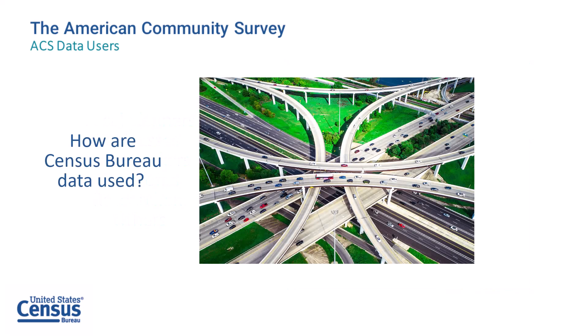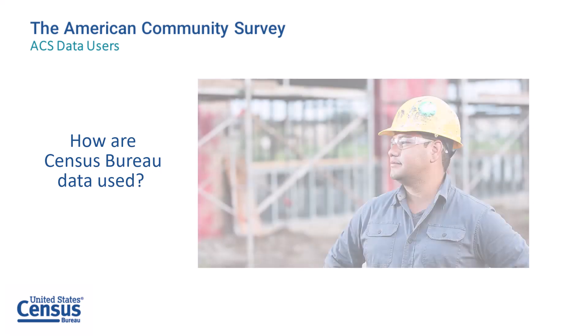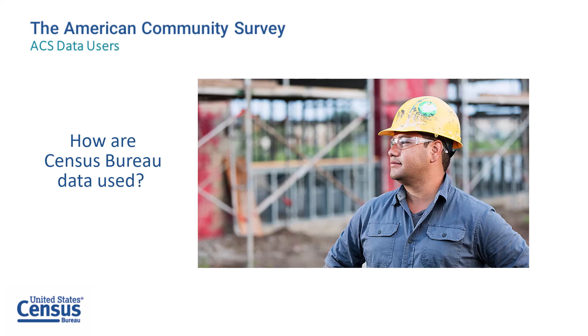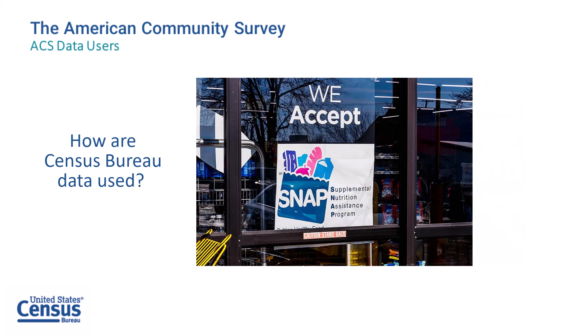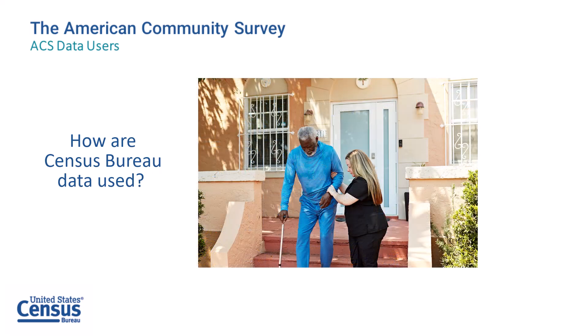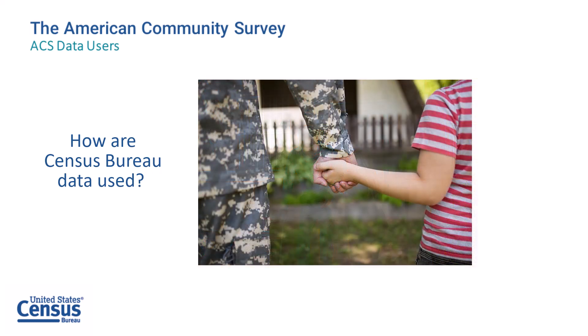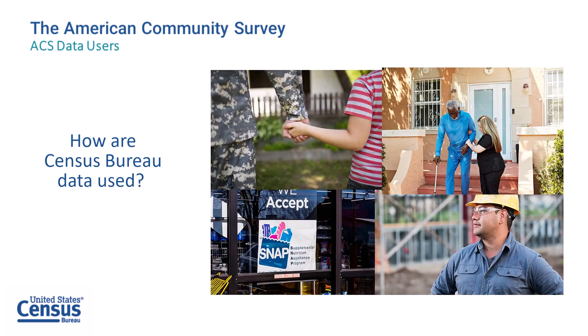Most people probably never think about how local planners use data to know where to target new development, or where businesses get the data they need to plan for expansion. Most probably don't think about where policy makers get the objective data they need to make sure programs are on track or that local services are keeping pace with their communities' changing demographics. Most people don't know that non-profit organizations use ACS data in their grant applications. ACS data serve the needs of these groups and a variety of other types of data users.